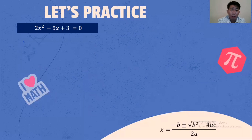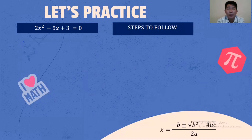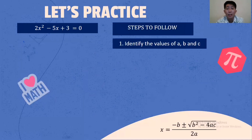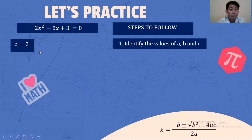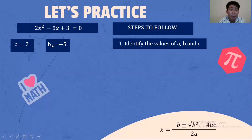Another example: 2X squared minus 5X plus 3 equals 0. Steps to follow. Number 1, identify the values of A, B, and C. The value of A is 2, that is beside X squared. The value of B is negative 5, that is beside X. And 3 is C, the constant.